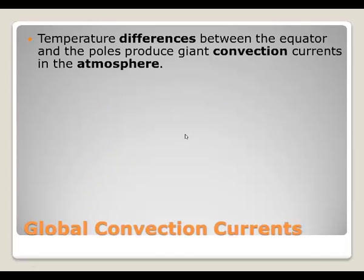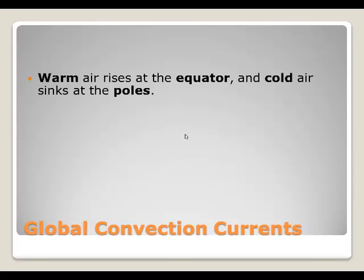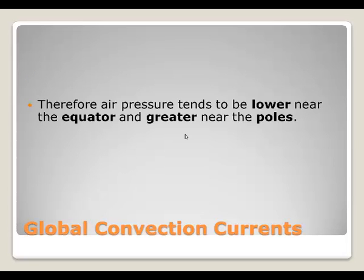Global convection currents: temperature differences between the equator and the poles produce giant convection currents in the atmosphere. Warm air rises at the equator and cool air sinks at the poles — similar to our air pressure simulation lab where heated water rose and cooled water sank. The Earth works exactly the same way. As a result, air pressure tends to be lower near the equator and greater near the poles, because where air is sinking there is greater pressure, and where air is rising there is less pressure.